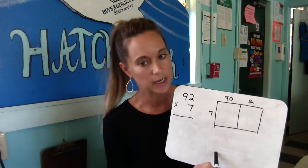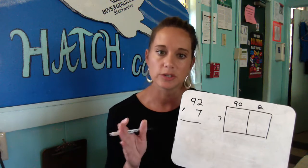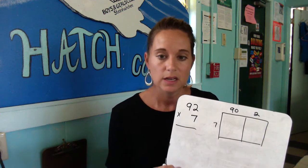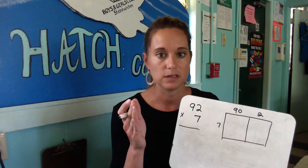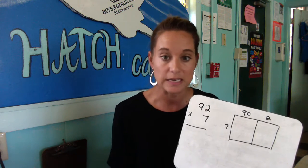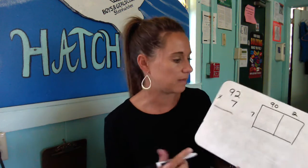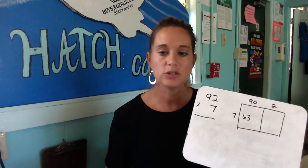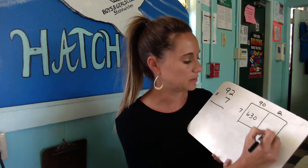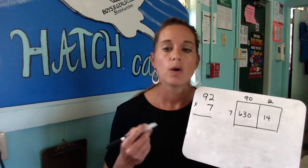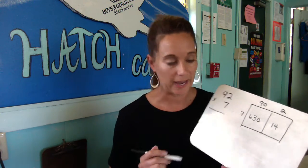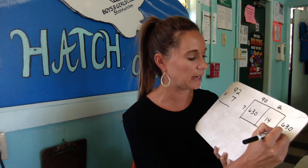The first number goes across and the second number goes down this way. A trick your children are being taught is: when you see ninety times seven, just think of nine times seven — don't try to actually do ninety times seven. Nine times seven is sixty-three, and then you just add that zero because it's a ten. Then of course seven times two is going to give you fourteen. So to figure out what ninety-two times seven is, you simply add these two.